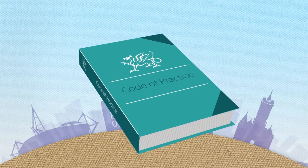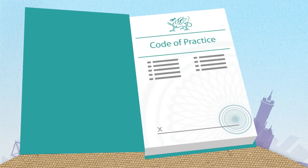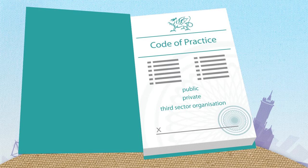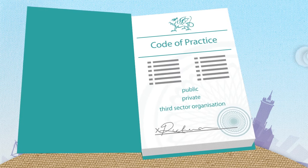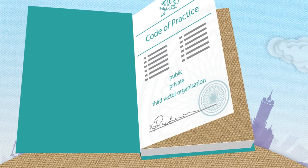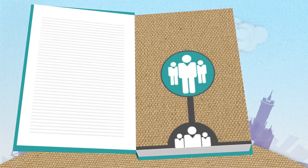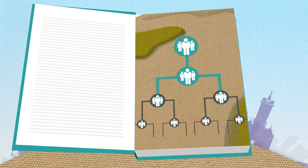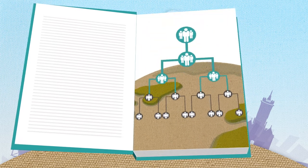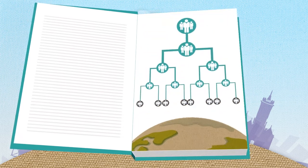The code has 12 commitments. Any public, private or third sector organisation can sign up. In signing up, organisations commit to ethical employment and to encouraging their suppliers to do the same, flowing the commitments down the supply chain.